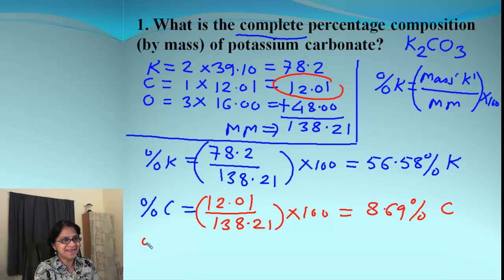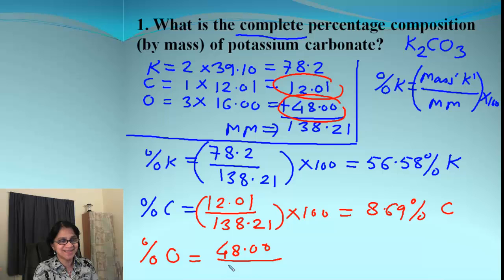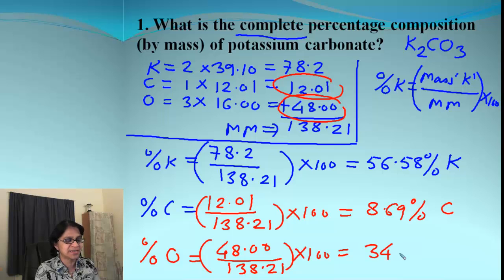It's getting simple, right? The next is percent oxygen and the total mass is 48.00. Divide that by molar mass, 138.21 and that times 100. So what we got was 34.73% and that's for oxygen.